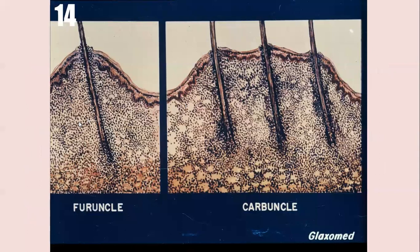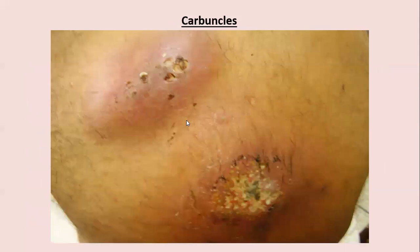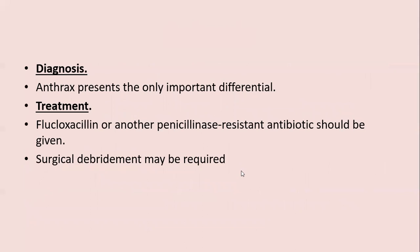A furuncle involves a single follicle while a carbuncle involves multiple contiguous hair follicles in a large inflammation, appearing as a large boggy swelling with multiple pus points. Anthrax presents the only important differential. Treatment is with penicillinase-resistant antibiotics such as flucloxacillin, amoxicillin-clavulanic acid, first-generation cephalosporins, or macrolides. Incision and drainage and surgical debridement are sometimes mandatory to treat a carbuncle.